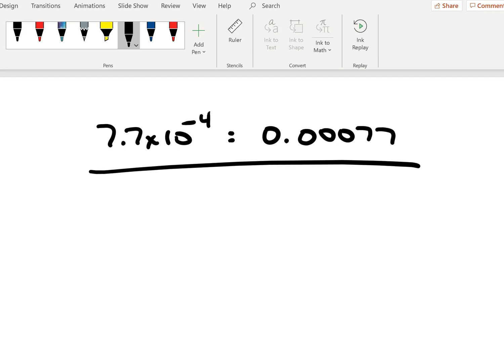As an example, we want to establish that 7.7 times 10 to the minus 4th power is equivalent to 0.00077.